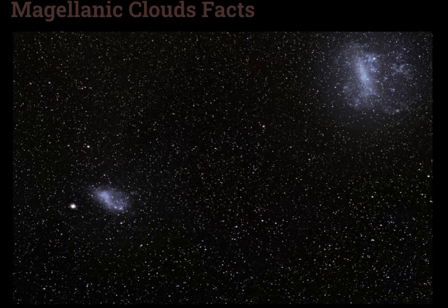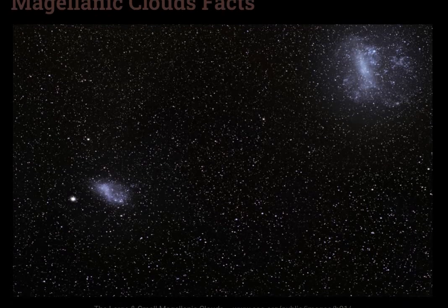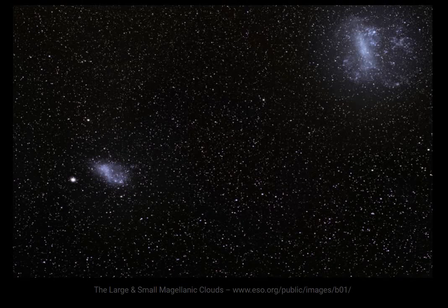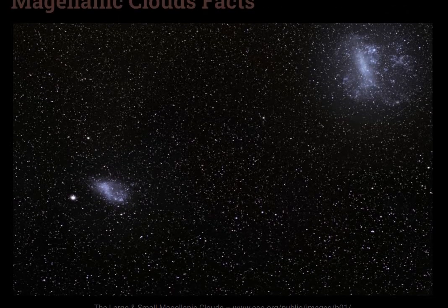The profile of the Large Magellanic Cloud: designation is LMC, type is Disrupted Barred Spiral, diameter is 14,000 light-years, distance is 163,000 light-years, mass is 10 billion solar masses, number of stars is 30 billion, constellation is Dorado and Mensa, and its group is the Local Group.